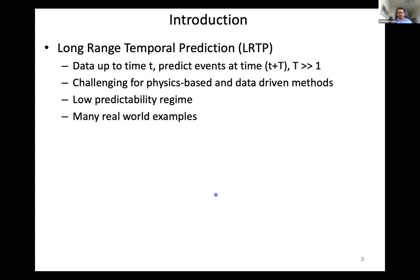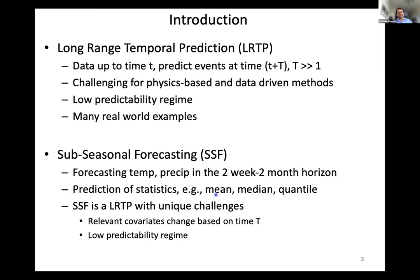There are numerous real-world examples. We're going to talk today primarily about sub-seasonal climate forecasting — forecasting temperature and precipitation in the two-week to two-month horizon. You're not trying to predict accurate numbers; you're trying to predict statistics like means, medians, and quantiles. SSF is an example of this long-range temporal prediction with unique challenges. The relevant covariates change based on time, and you're operating in the low predictability regime.